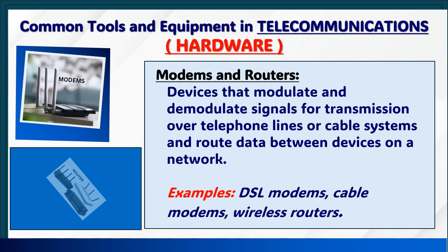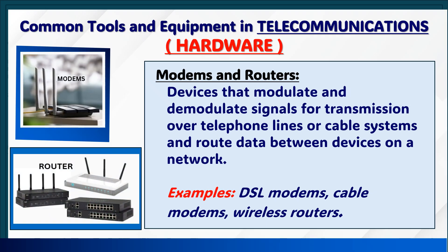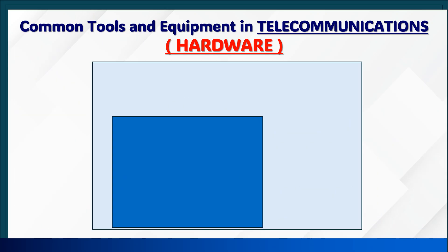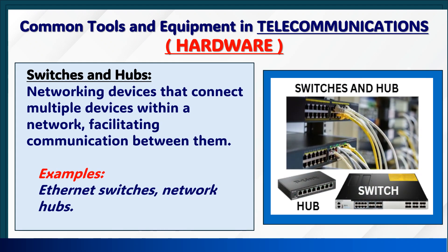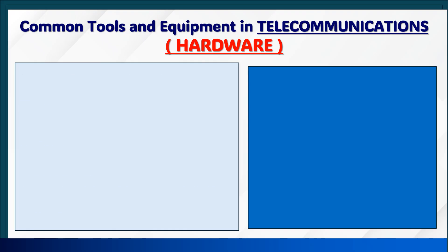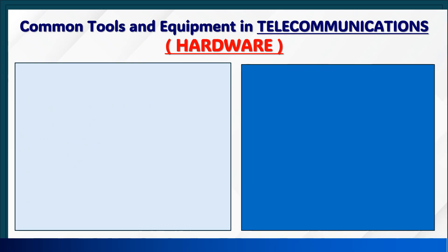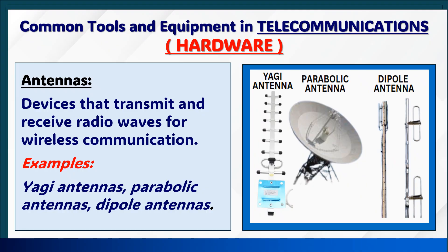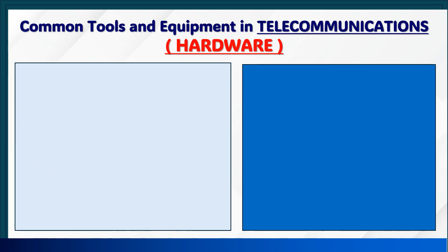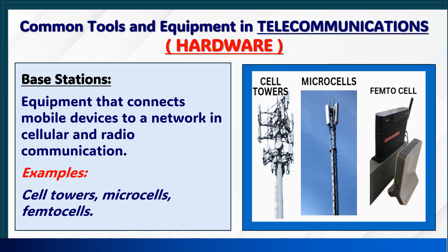The common hardware tools and equipment in telecommunications include: modems and routers — devices that modulate and demodulate signals for transmission over telephone lines or cable systems and route data between devices on a network. Examples: DSL modems, cable modems, wireless routers. Switches and hubs — networking devices that connect multiple devices within a network, facilitating communication between them. Examples: Ethernet switches, network hubs. Repeaters and extenders — devices that amplify or regenerate signals to extend the range of a network. Antennas — devices that transmit and receive radio waves for wireless communication. Examples: Yagi antennas, parabolic antennas, dipole antennas. Base stations — equipment that connects mobile devices to a network in cellular and radio communication. Examples: cell towers, microcells, femtocells.